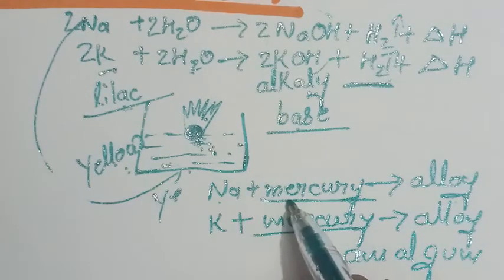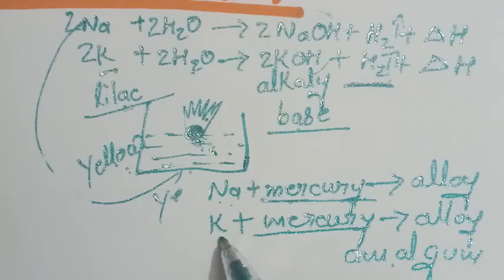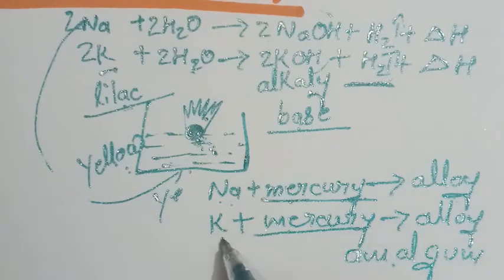If mercury is added with sodium, it forms sodium amalgam. And mercury added with potassium forms potassium amalgam.